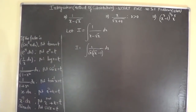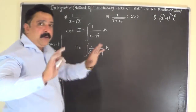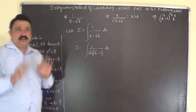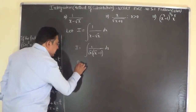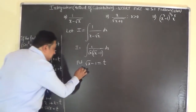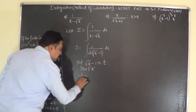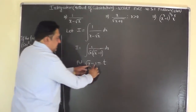Think about what substitution you can make. Put √x minus 1 equals t. As long as you get a replacement factor, there's no problem for the substitution. Now after substituting, the next step is to differentiate with respect to x. The differential coefficient of √x is 1 over 2√x.